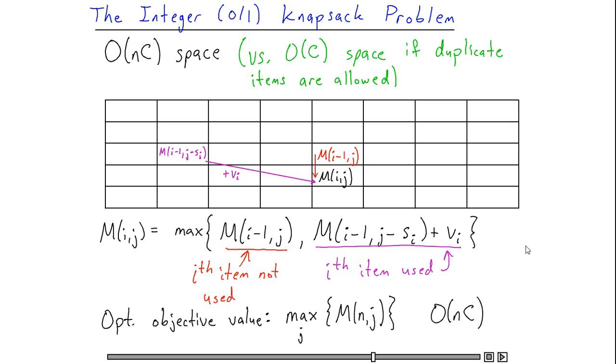And to that entry, we have to add the value of the i-th item. So in general, every value m i j is just computable by looking at two values on the previous row of our table. And in fact, many people think of dynamic programming as just filling in a table containing optimal solutions to larger and larger subproblems.